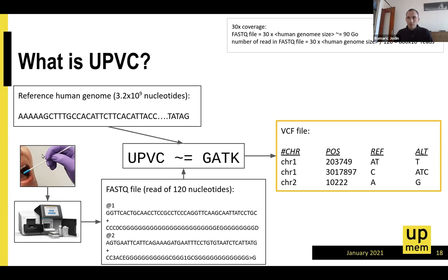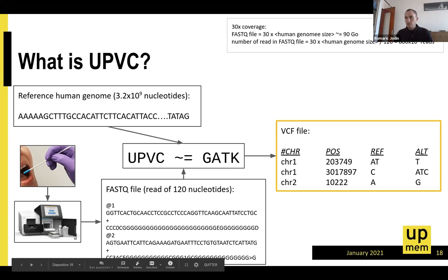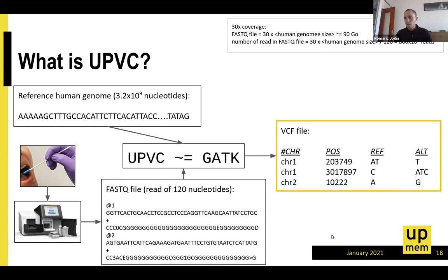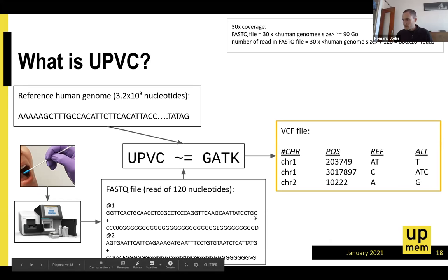UPVC is an algorithm that finds differences between a reference human genome and a sequenced human genome. The reference human genome is available online and the algorithm maps sequenced reads to it to identify variants.